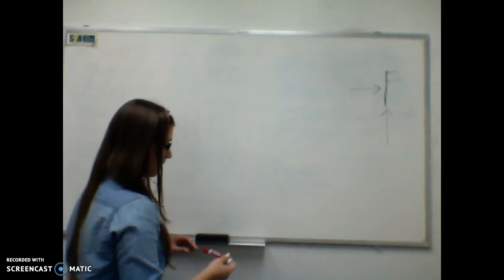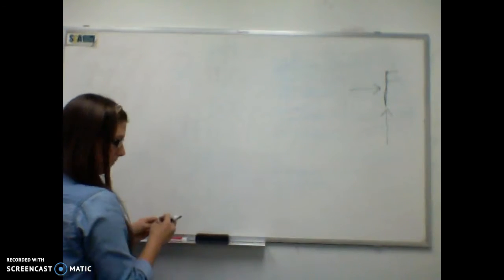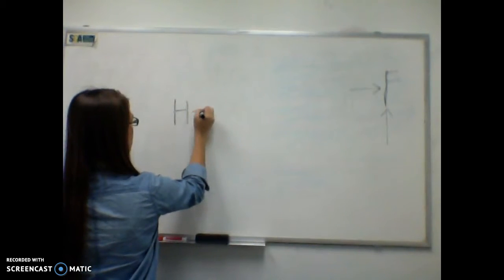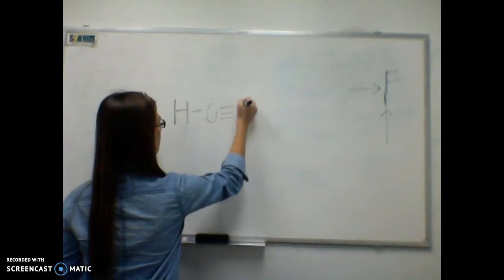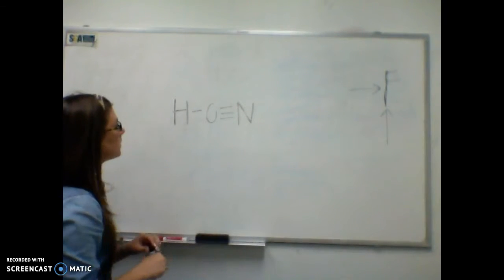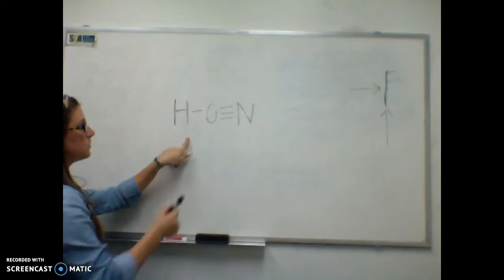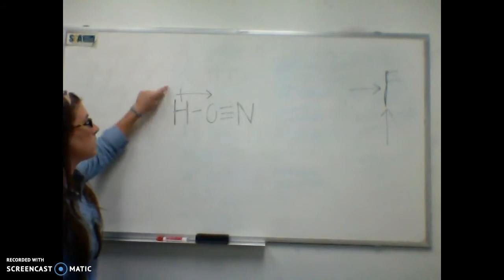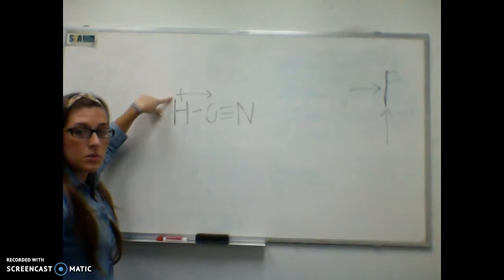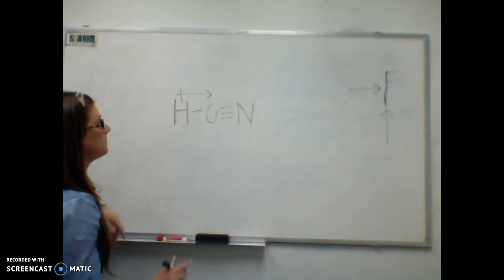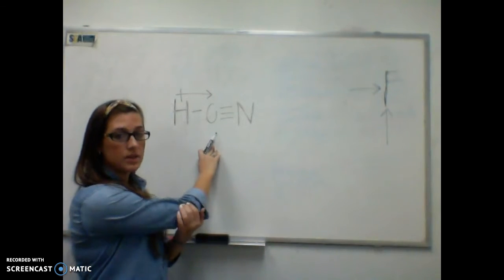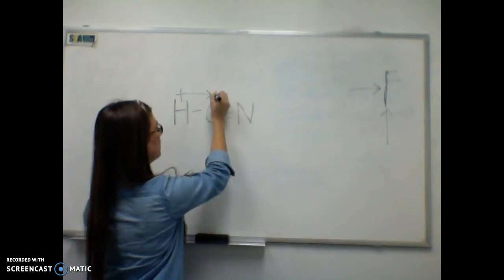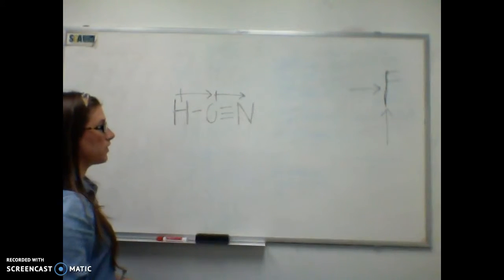Another example we could do is HCN. We know that carbon is going to be more electronegative than hydrogen because it's closer to fluorine, so we draw the arrow going towards the more electronegative atom. You can remember it because the tail of the arrow looks like a plus sign, so the plus sign is going to be over the more positive atom. We also know that nitrogen is more electronegative than carbon because it's also closer to fluorine, so we draw another arrow going towards the more electronegative atom.